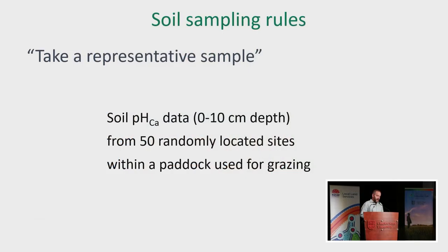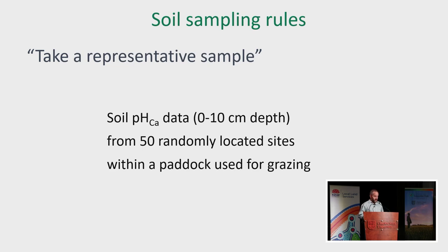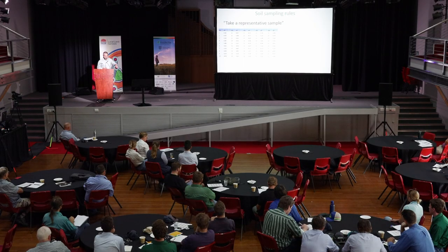To give you an idea of why representative sampling is important, I'm going to take you through a piece of work done literally hundreds of metres from here. Just soil pH data, 0 to 10, because it was back in the day — 50 randomly allocated sites from an area that was uniform. It behaved uniformly: it was a pasture used for paddock, fertilised well, had a history of lime. So 50 sites sampled and analysed — there's the data set, with sites numbered and soil pHs that relate to those sites.